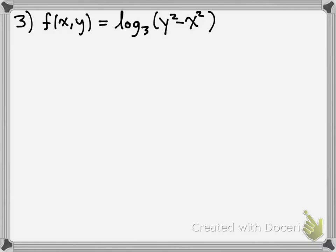We've got log base 3 of y squared minus x squared. You should remember that the derivative of a logarithm with a base is 1 over u times ln of a, times du/dx. Pretty much we're just going to follow that formula, but we're doing it with partial derivatives.